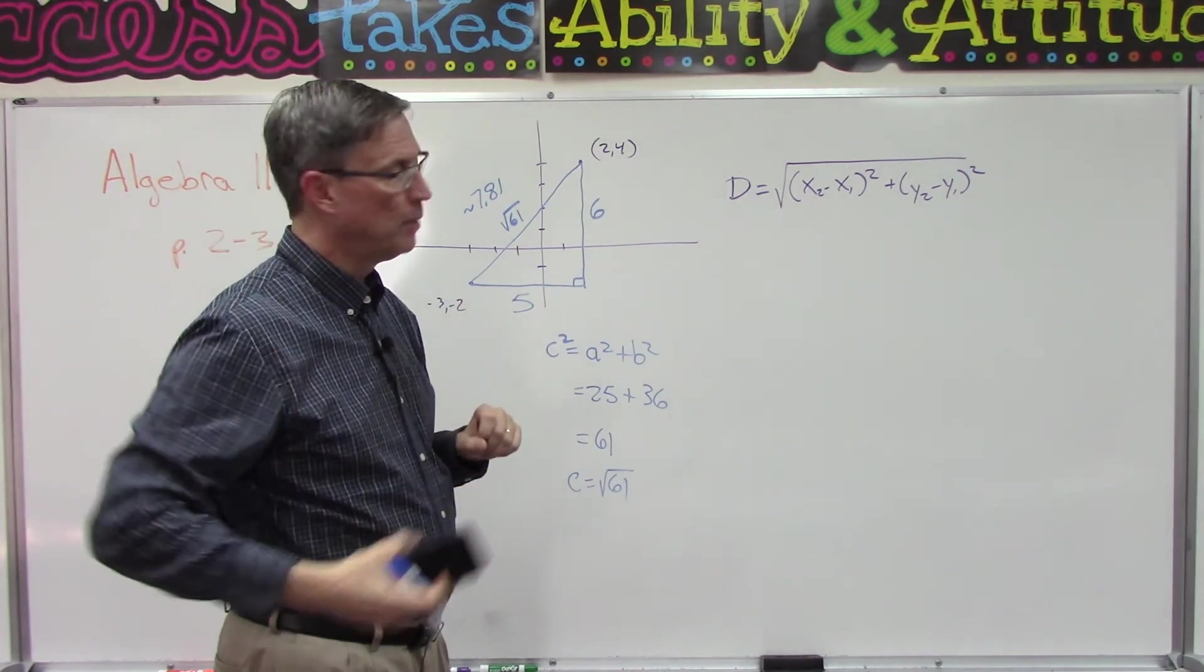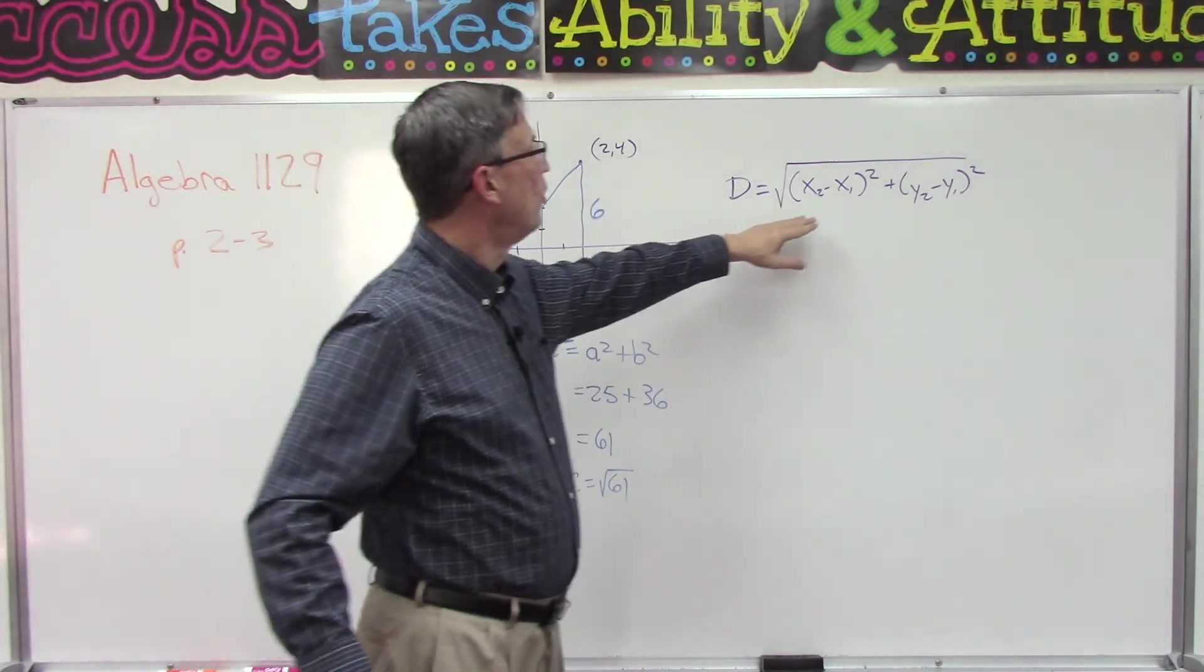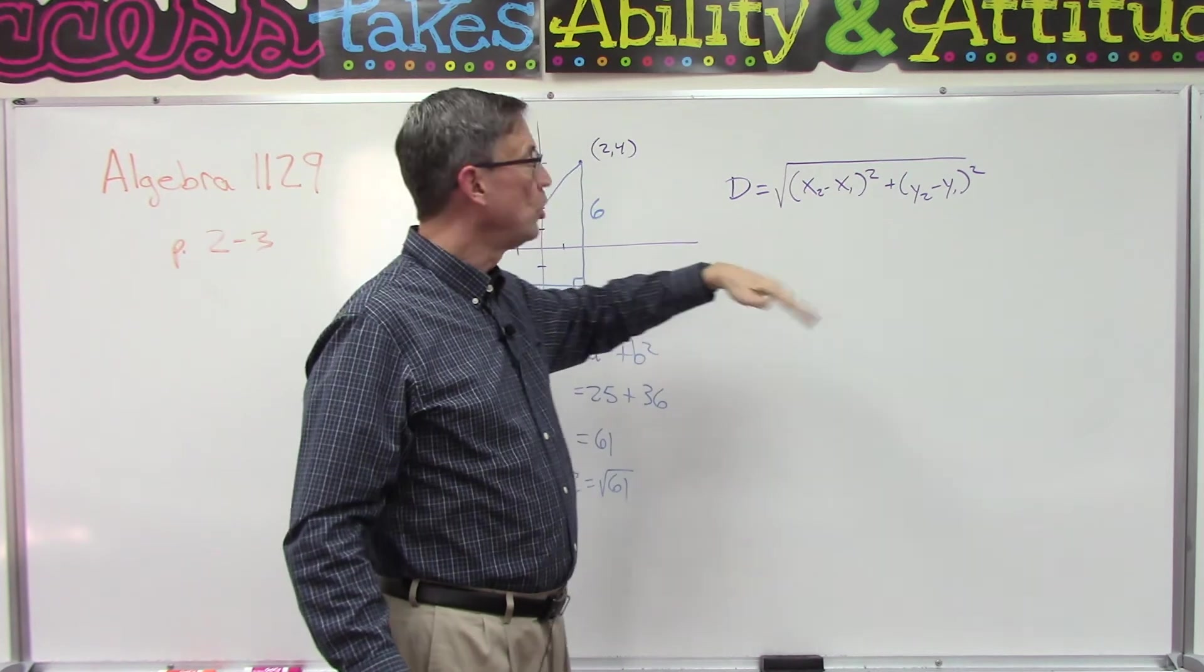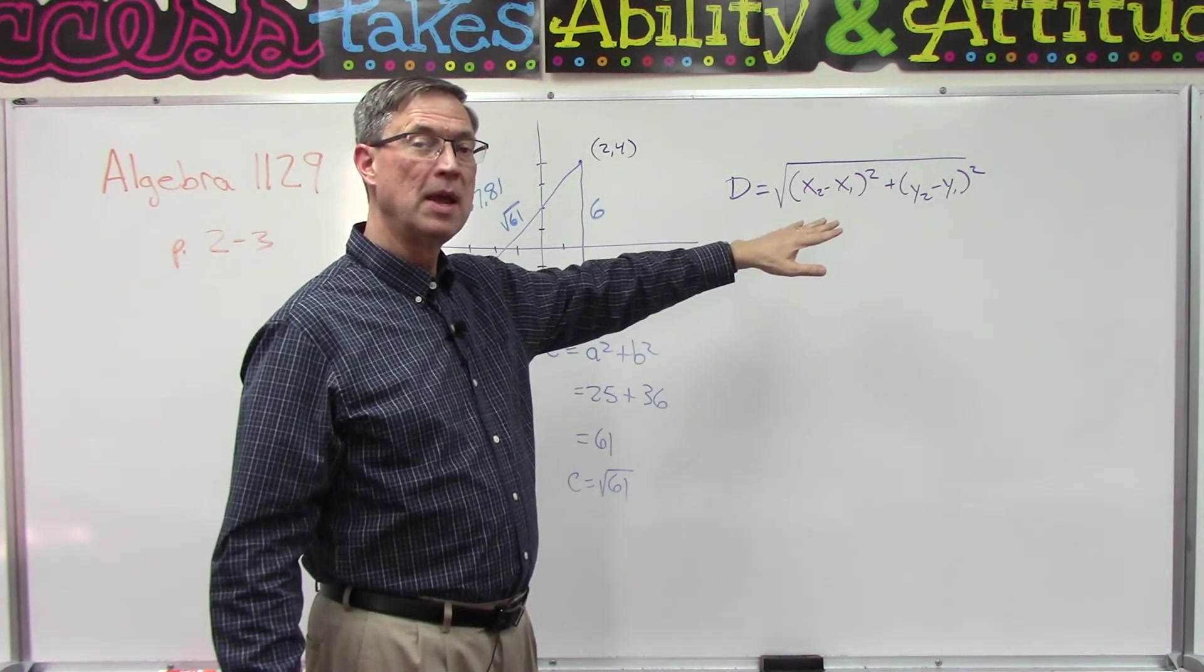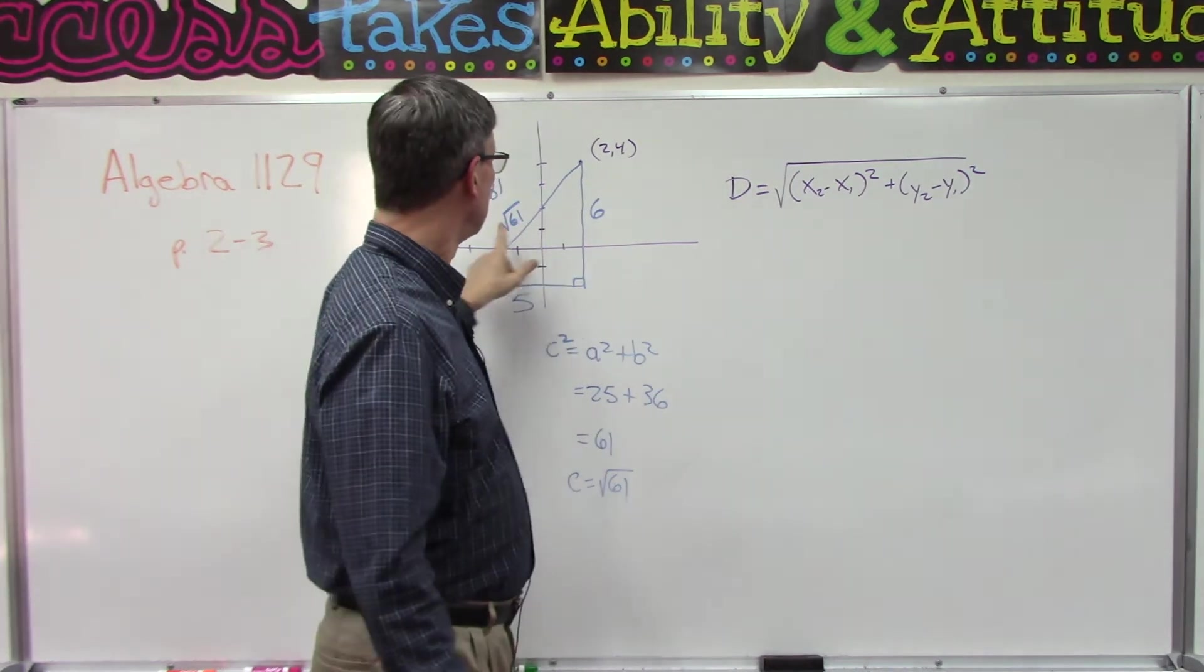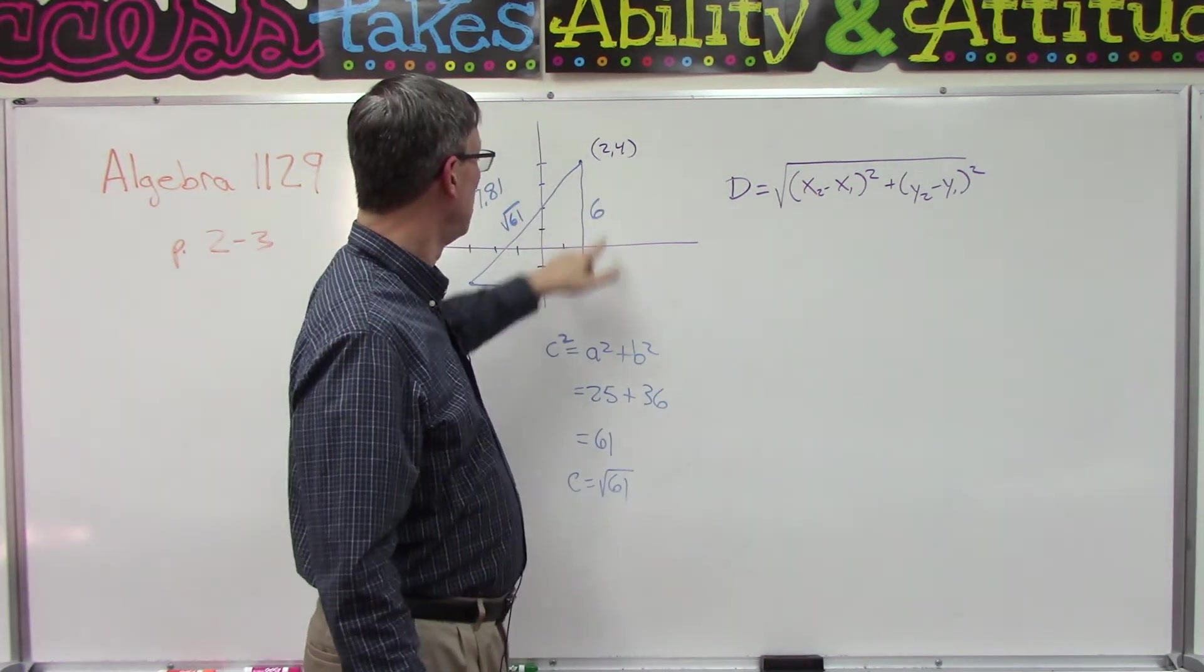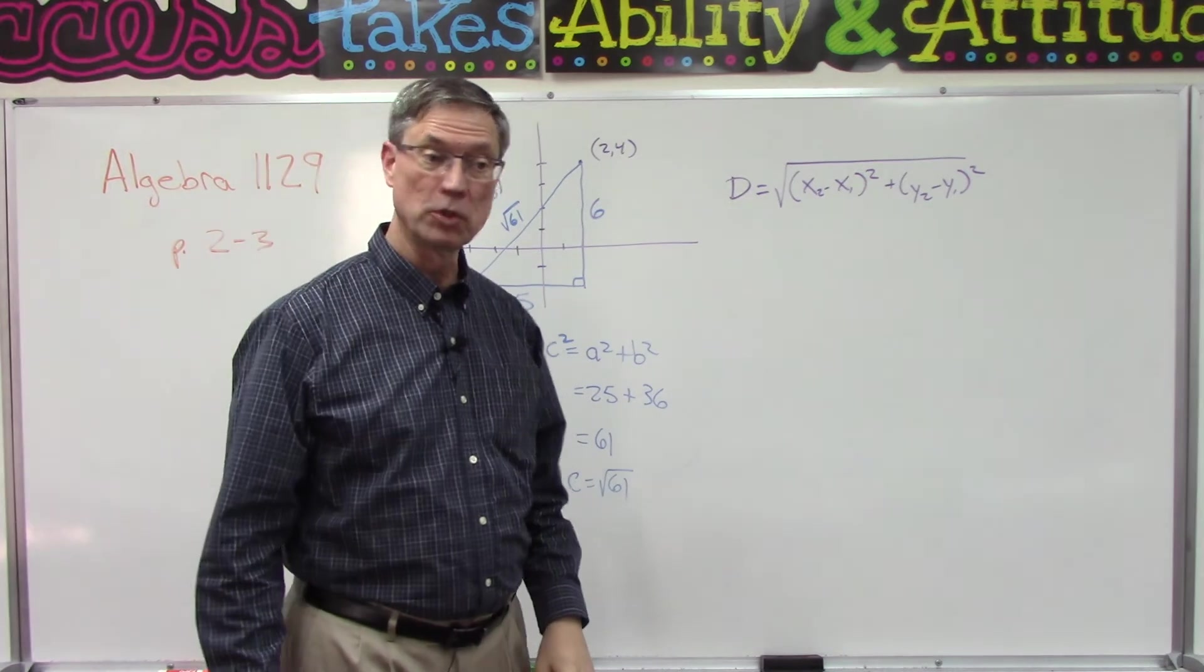Now I want to show you something really cool here, because this is the formula that could help us. If all we knew were these two points, we could plug in those points and figure out the square root of 61 without having to graph it and use Pythagorean's theorem. So let's see where this comes from.